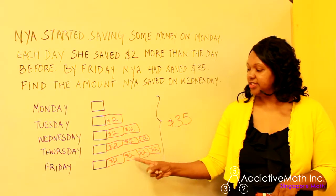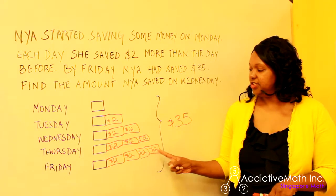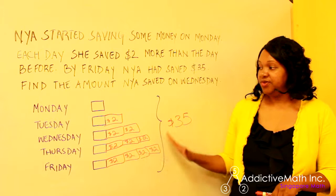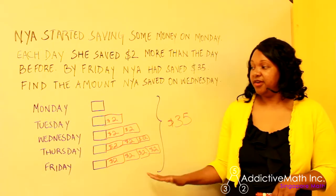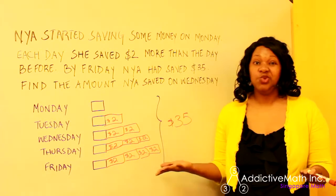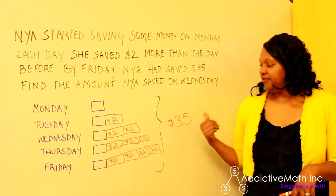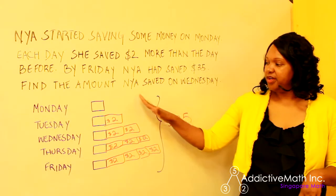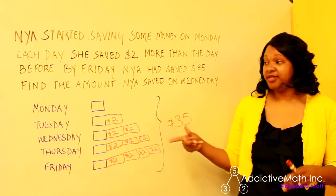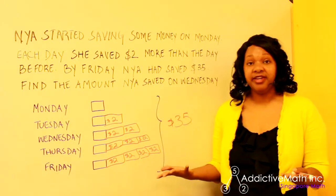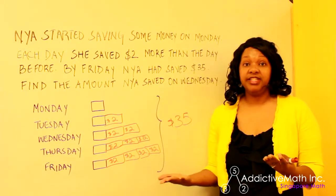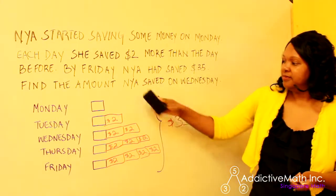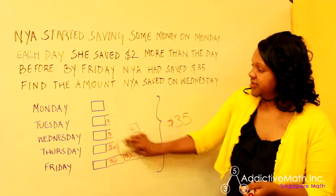Two, four, six, eight, 10, 12, 14, 16, 18, 20. So if you're just adding up the twos that we have over here, it's 20. We have 35, and we're going to need to get rid of these.